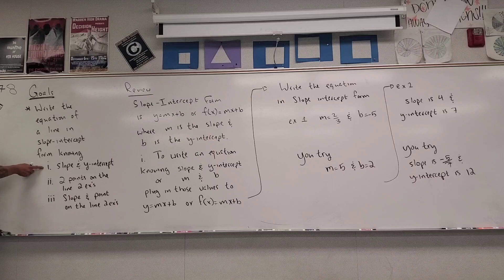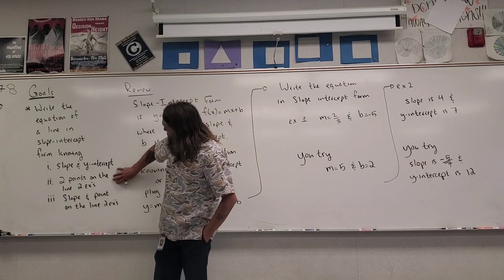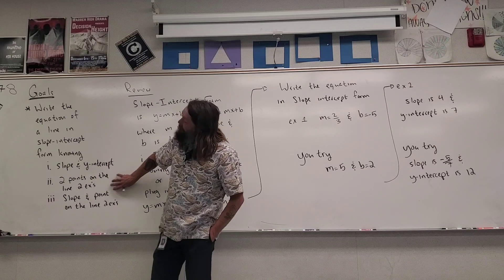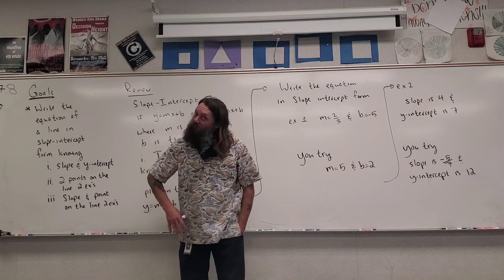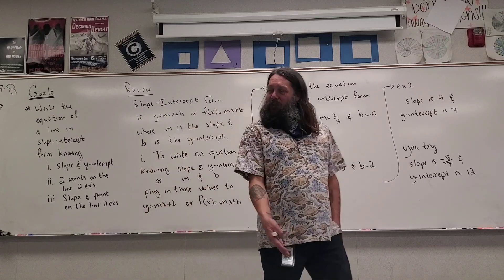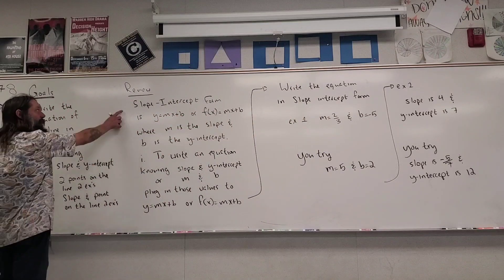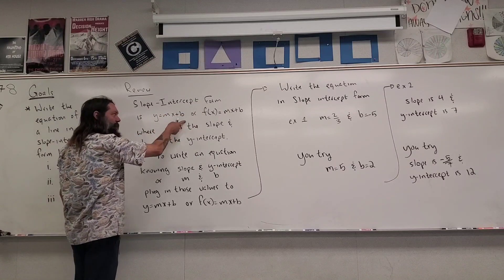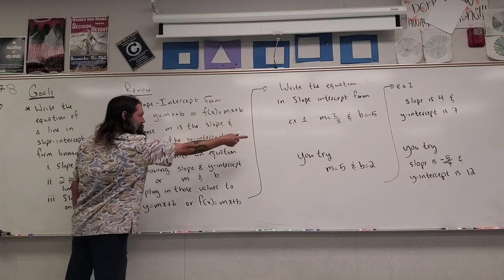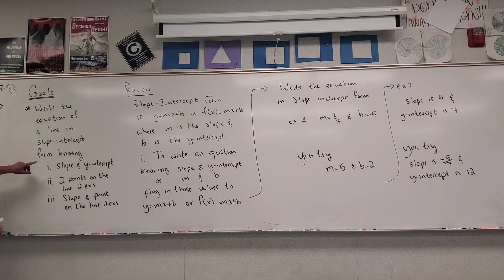Classically this lesson is taught in the order one, three, two, but I find that if I switch the order and make the two-points problem the second type instead of the third, more of you understand it better and it relates the problems more. Before we get into examples, we need to review slope-intercept form: y = mx + b, or f(x) = mx + b, where m is the slope and b is the y-intercept.